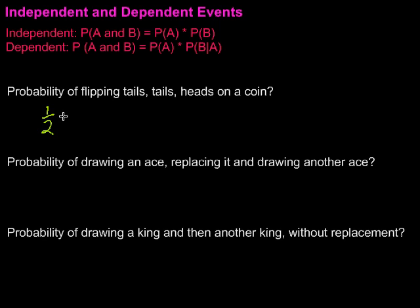The probability of flipping that tail is going to be one-half as well. And finally, the probability of flipping heads is going to be one-half as well. So, multiply those all together. One-half times one-half times one-half would be one-eighth.